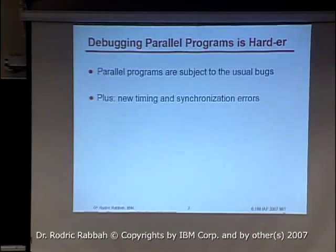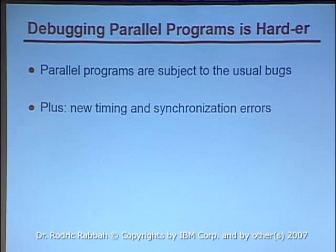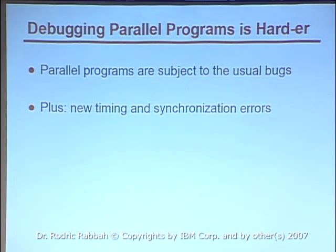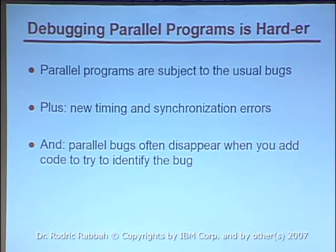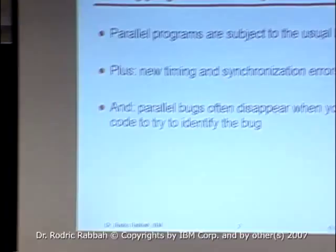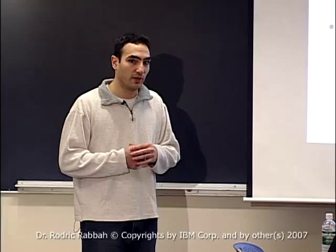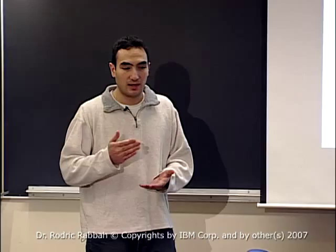On top of the traditional bugs, you add new things that can go wrong because of parallelization — things like synchronization, deadlocks, and data races. To make it worse, bugs in parallel programs often just go away. If you change one instruction or reorder things, the bug is gone — like those pointer problems in C where you add a variable or a printf and the problem disappears. This makes it really hard to have a repeatable experiment.